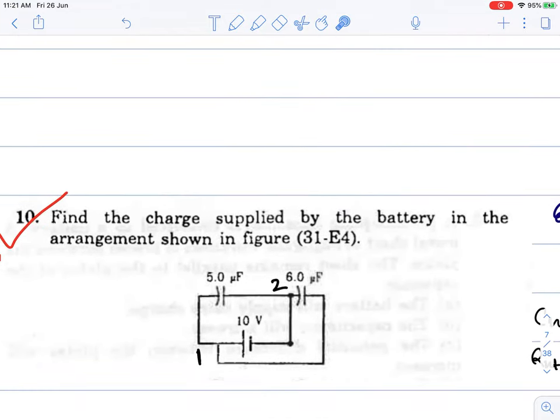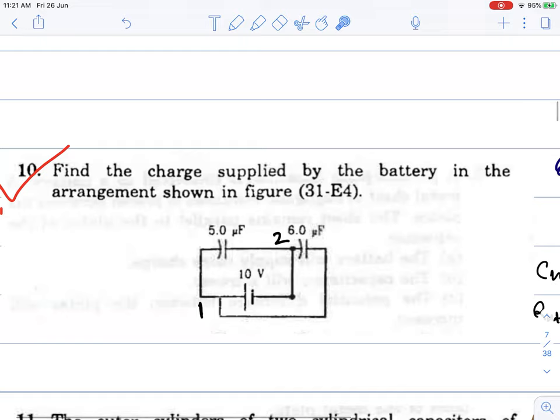Find the charge supplied by the battery in the arrangement shown in the figure. We have to analyze the circuit here. Suppose we mark point 1 and point 2. The battery is connected between these points. Mark the connections carefully to understand how the circuit is connected.